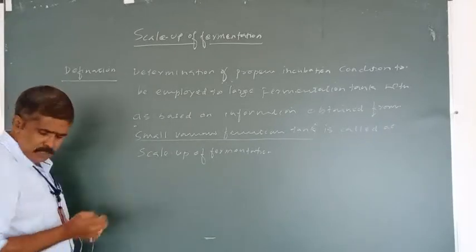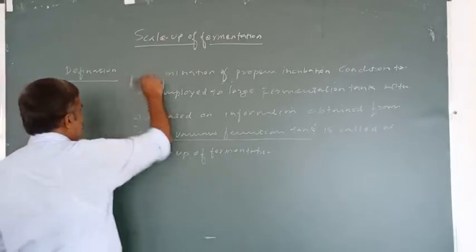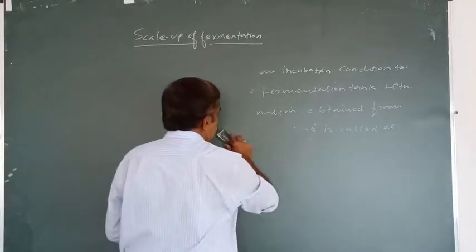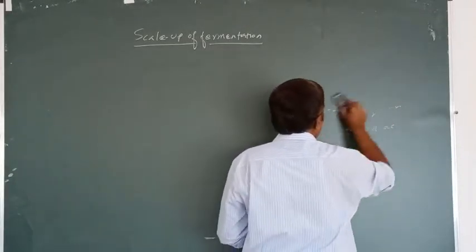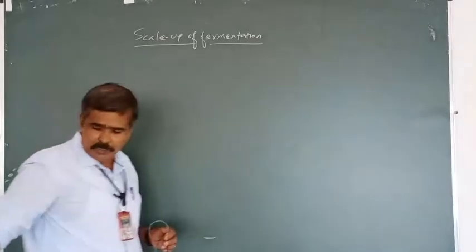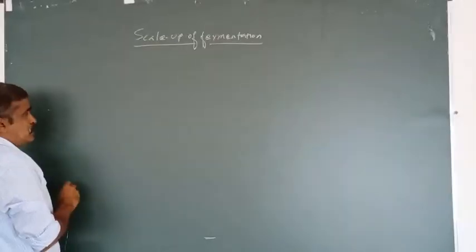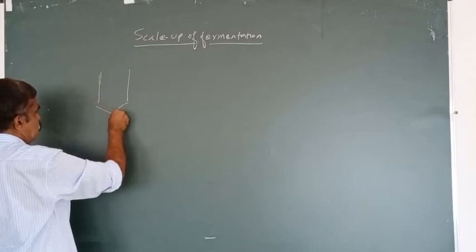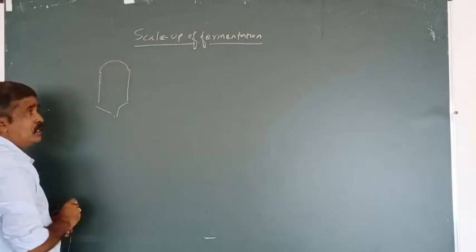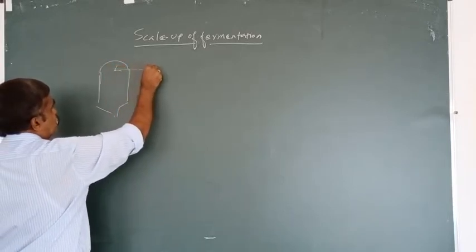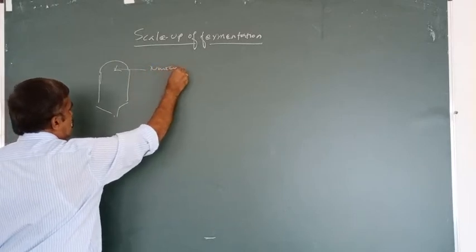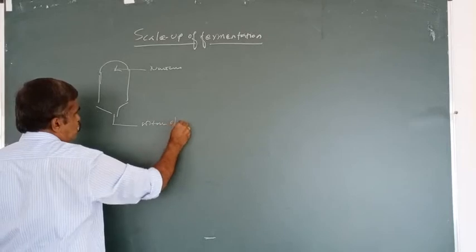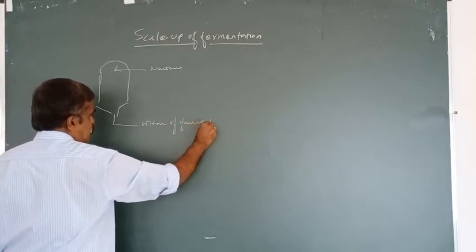A small example: there are two types of fermentation. One is called continuous fermentation and the second is batch fermentation. In continuous fermentation, there is a fermentation tank with continuous addition of nutrients and continuous withdrawal of the fermentative product.